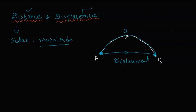Displacement is a vector physical quantity. This means when you express displacement, you need both the magnitude and the direction.